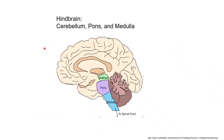If we zoom into the hindbrain, we can see it consists of three main structures: the cerebellum, the pons, and the medulla. These are very primitive structures found in a variety of animals and they are involved in maintenance of the body. A lot of the autonomic functions that happen involuntarily — like breathing, heart rate, blood flow, and sleep cycle — are controlled by the pons and medulla. These are highly conserved functions present across a variety of animals.